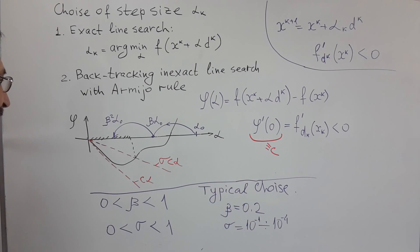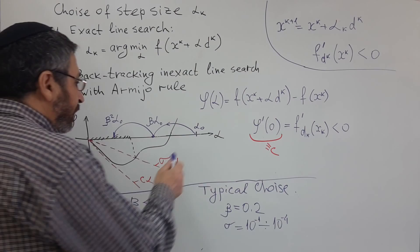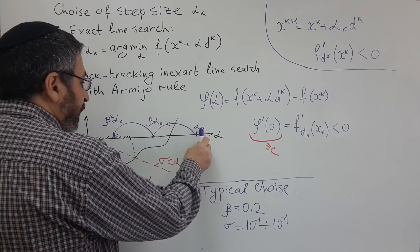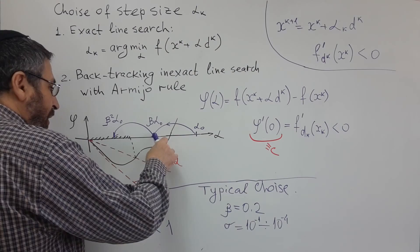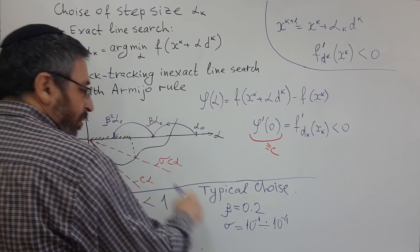And what we do with backtracking line-search, we start with some relatively large value, alpha zero. And we will check certain stopping condition, and if it is not satisfied, we will decrease alpha, multiplying by some constant beta. Typically, beta is like zero point two.